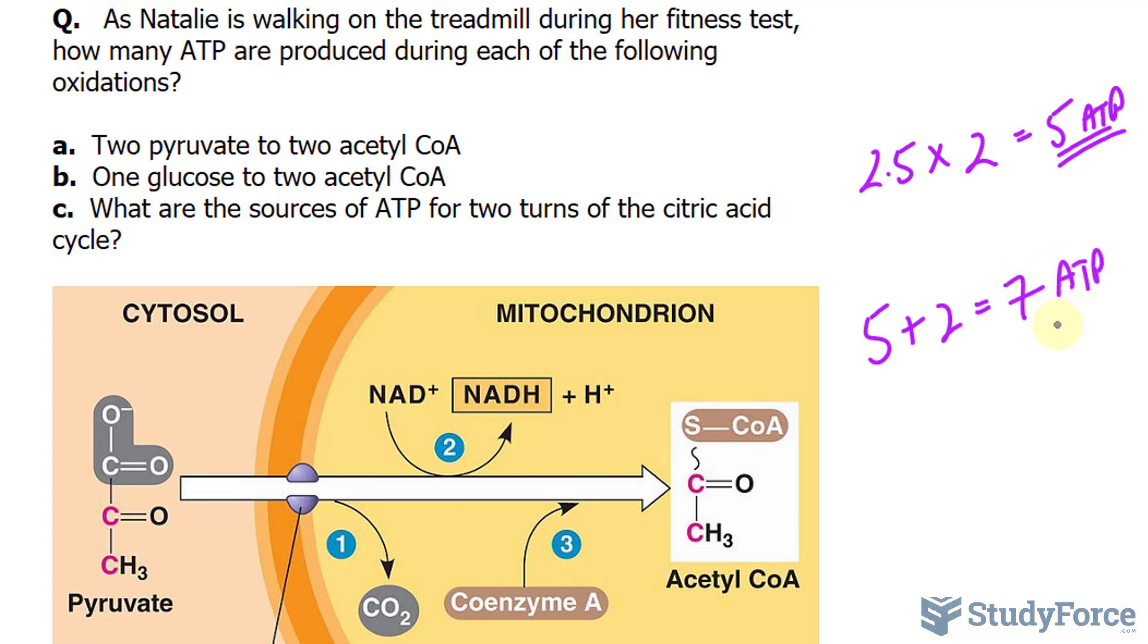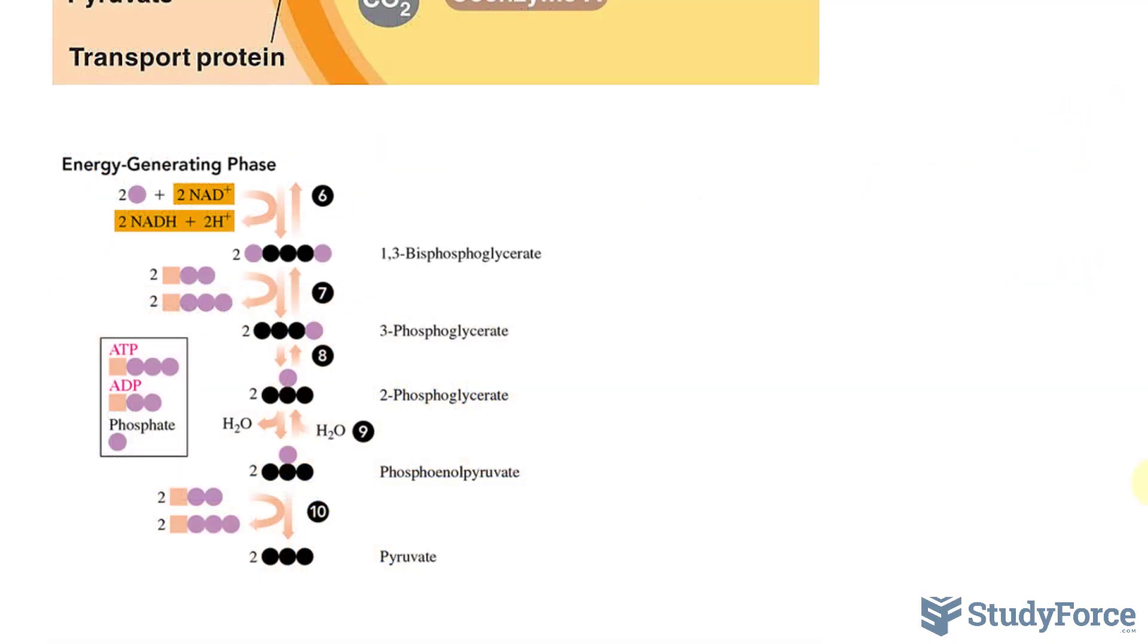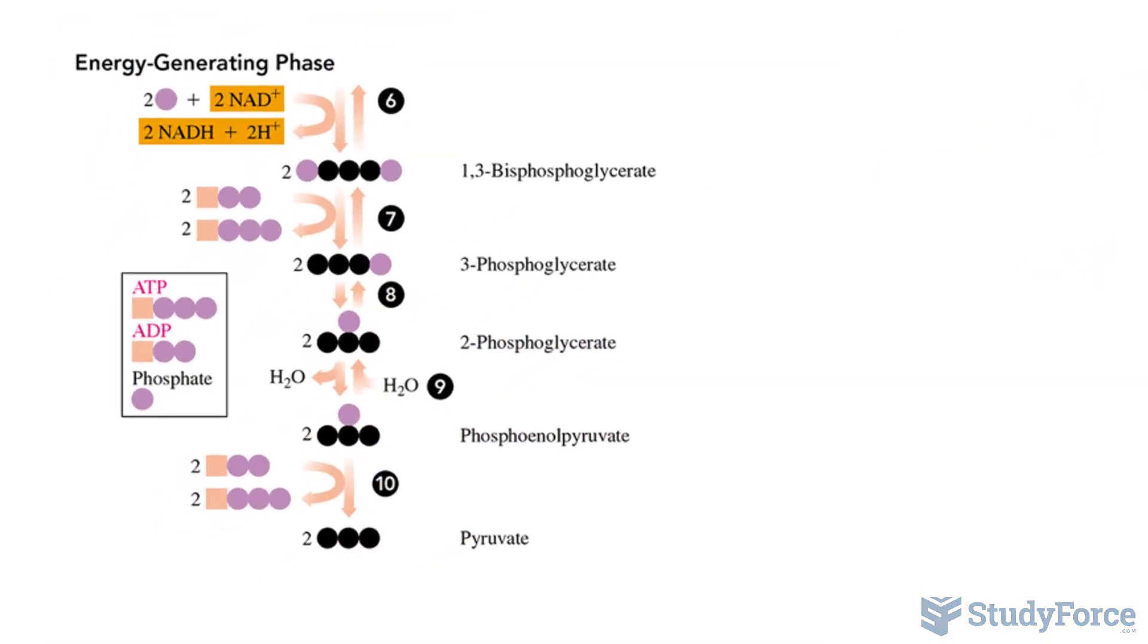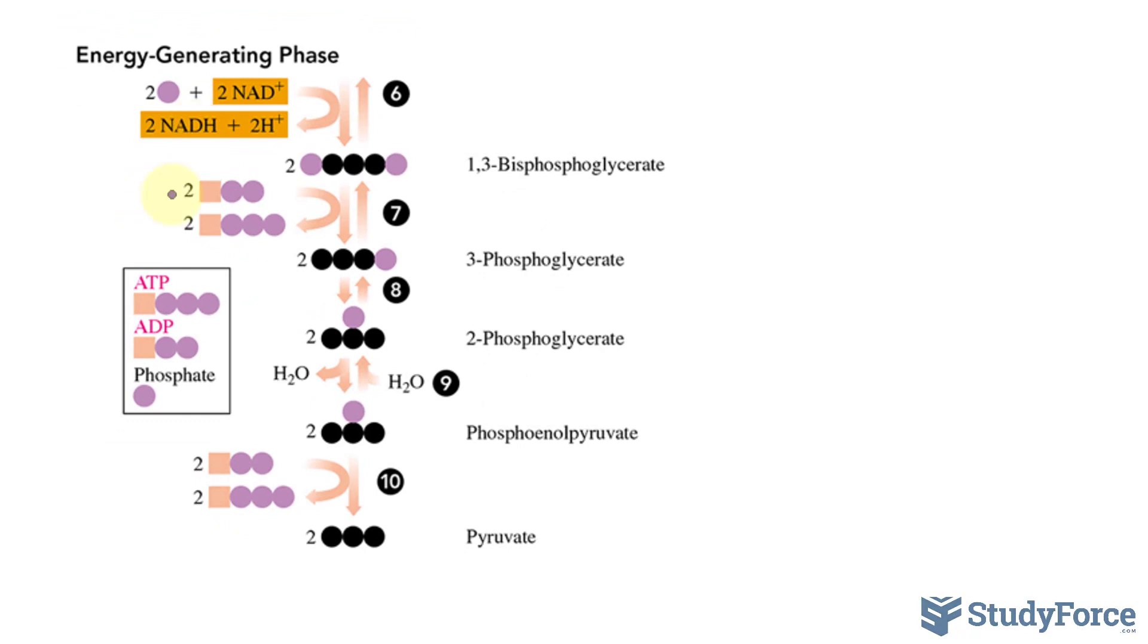One other thing that you don't want to miss is that not only are ATPs formed from glycolysis, but also NADH molecules. So two NAD-plus molecules are reduced to two NADH. So we can multiply that now by 2.5,